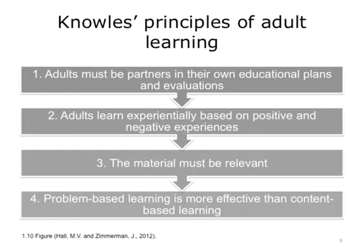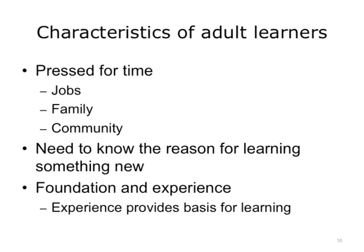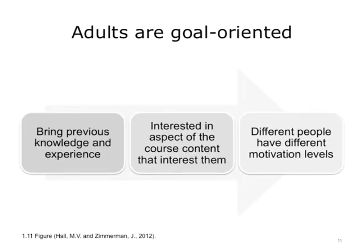The principles that Knowles put forth are: adults must be partners in the learning, education plans, and evaluations. Adults learn experientially based on positive and negative experiences they've had in the past. The material presented to adult learners must be relevant to the learner. Problem-based learning is more effective than content-based learning or memorization. Adults are pressed for time — they have jobs, families, and communities competing for their time. Adults are goal-oriented and bring previous knowledge and experience to the classroom, and they may focus on content directly relevant to them. Different people also have different motivation levels, and this affects their goals.